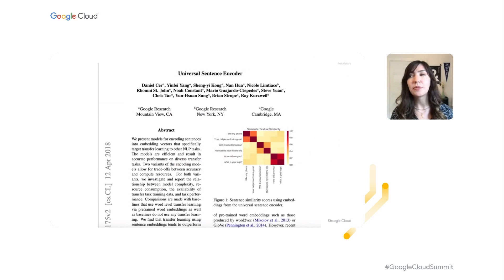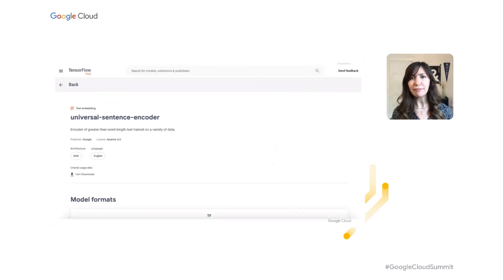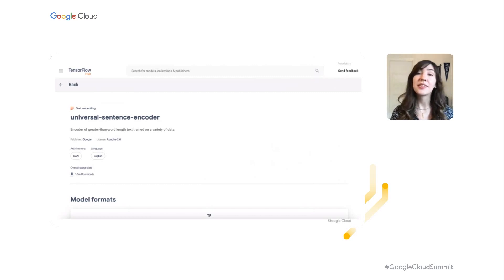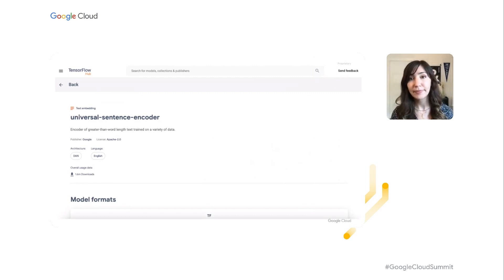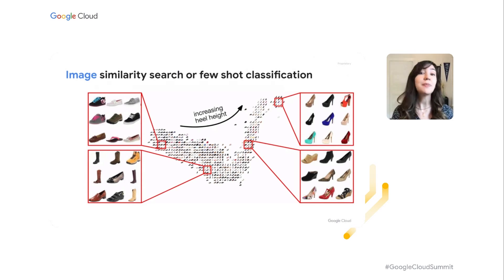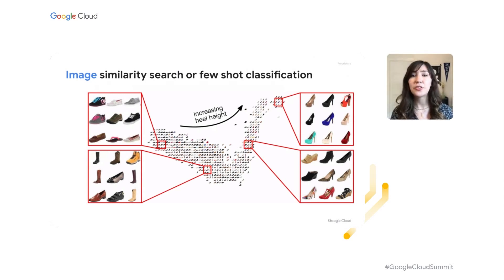For example, if you want to find a news article similar to one you have, you can embed the text using the Universal Sentence Encoder module, available open source through TensorFlow Hub. And while text similarity search uses text embeddings, nowadays we're embedding all sorts of different types of data. With image embeddings we can do reverse image search — take a picture of shoes and find similar ones. We can also embed users and customers to find clusters with similar buying habits, or do multimodal embeddings where we embed an image and text together to see if they're describing the same thing.